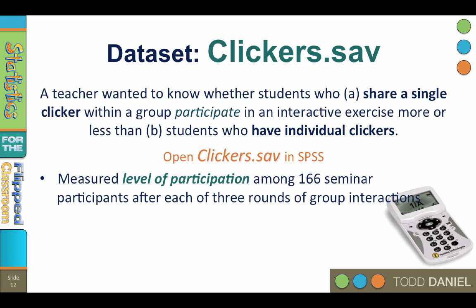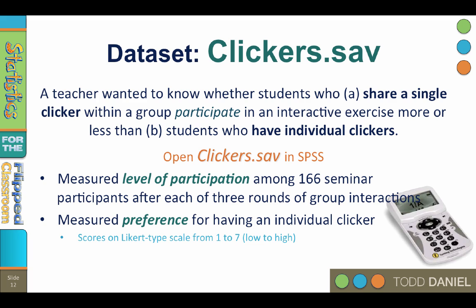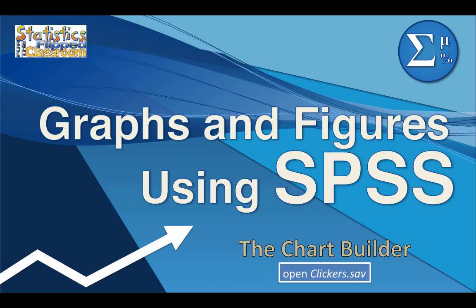Level of participation was measured among 166 seminar participants after each of three rounds of group interactions. Later, students were asked whether they would prefer having an individual clicker. Both participation and preference were measured using a Likert-type rating scale with scores ranging from 1 to 7, where 7 equals high participation or high preference, and 1 equals low participation or low preference for an individual clicker. We also asked about gender. Go ahead and open the dataset now in SPSS before continuing through the rest of the videos.